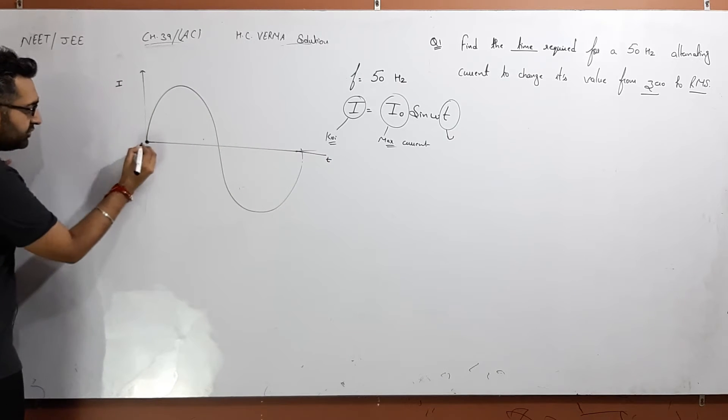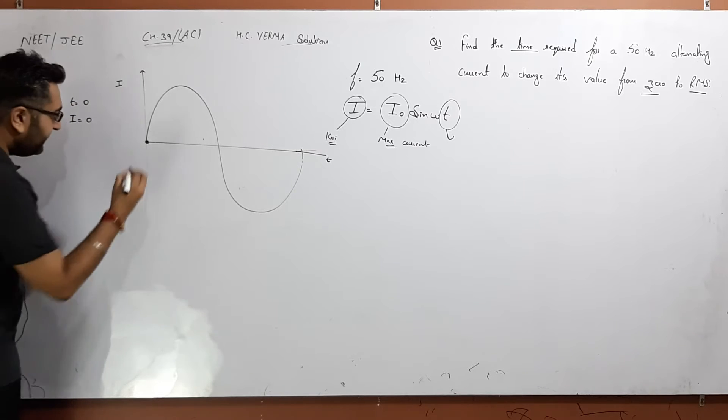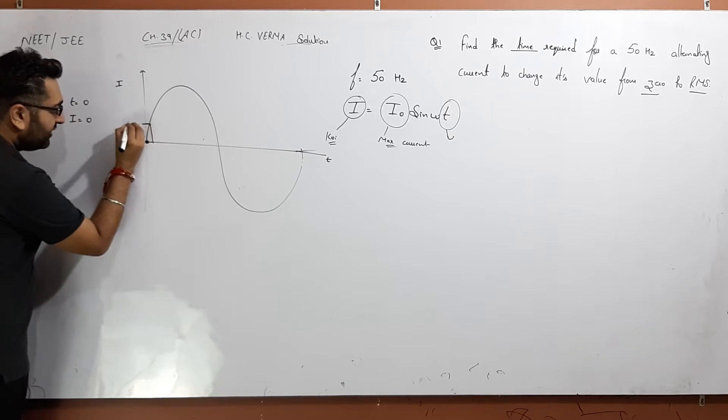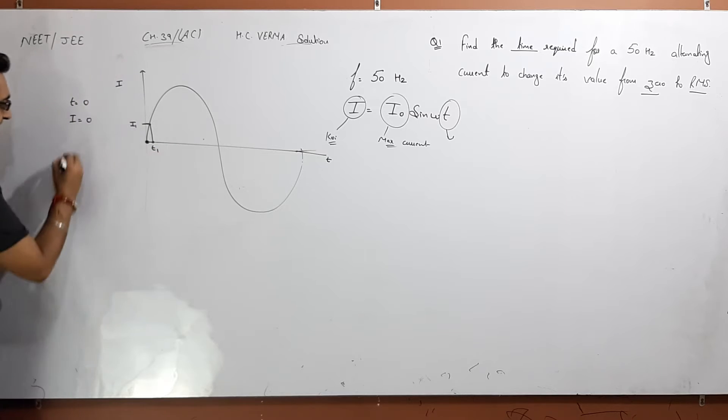So at this particular point we see the time is zero and current also is zero. At this particular point, the current value is I1, so here the time value is t1. So when the time is t1, the current is I1.